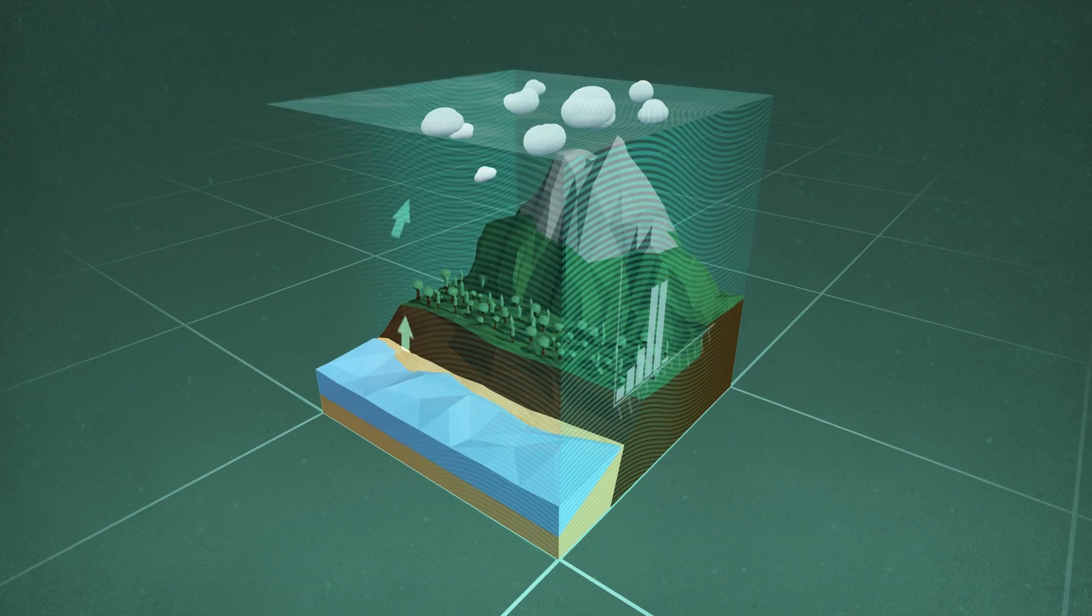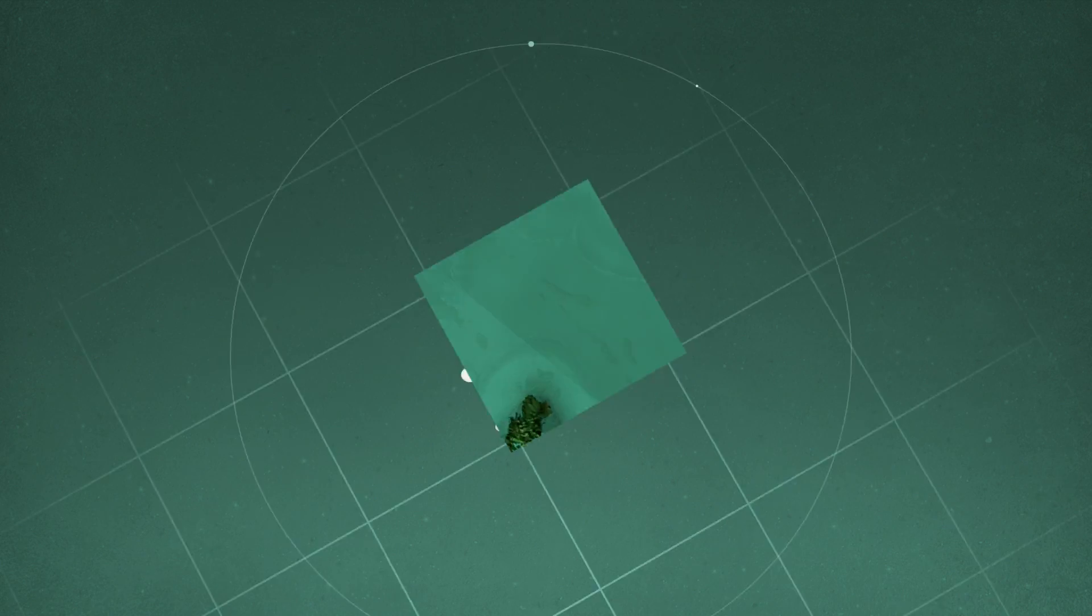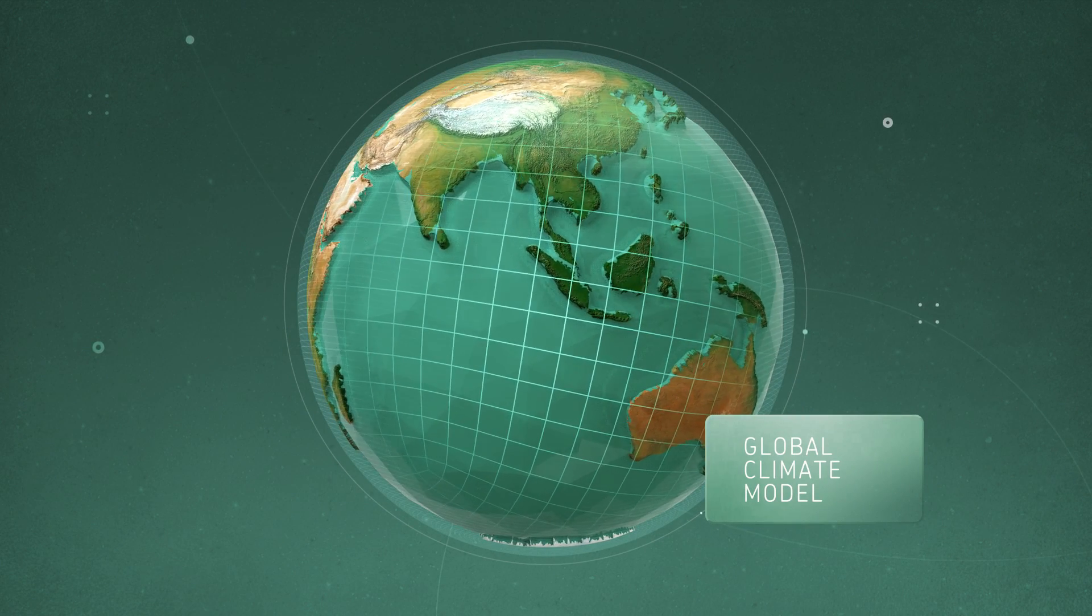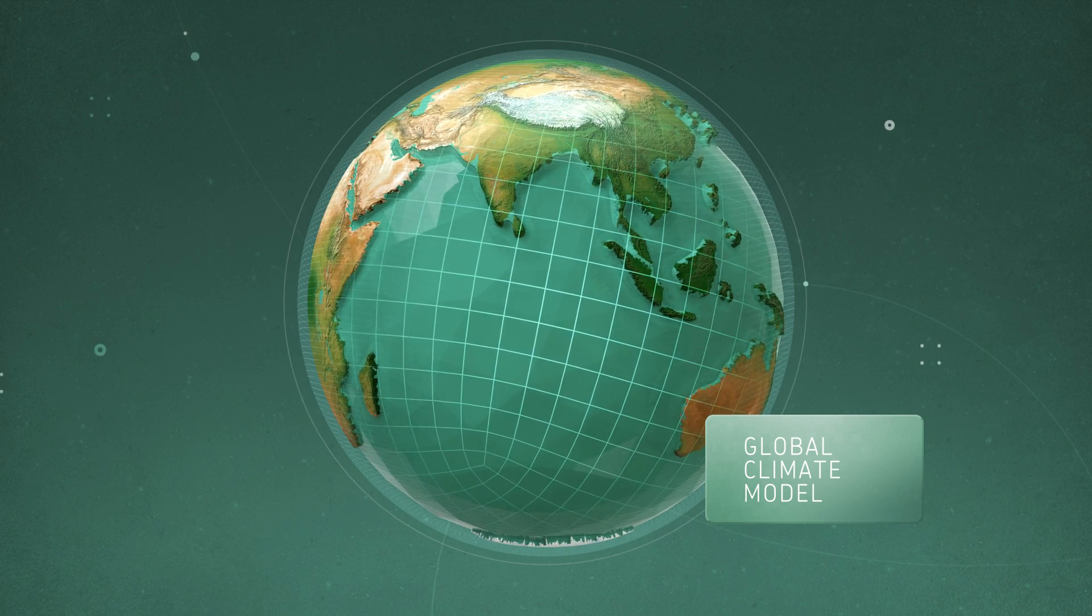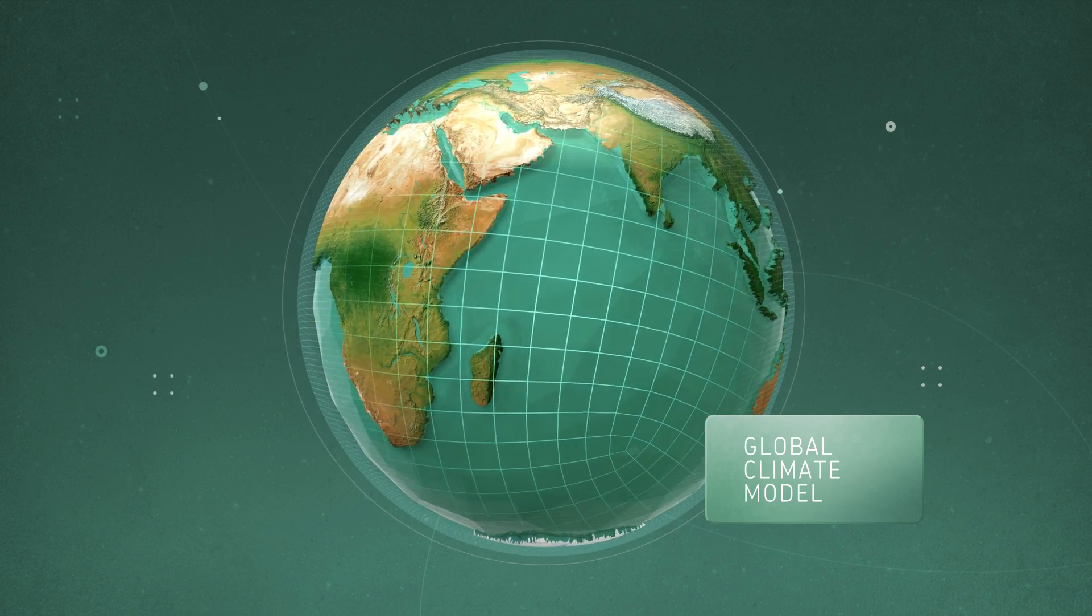Scientists use this knowledge to program computer models that simulate our weather and climate. These are called global climate models and they provide forecasts of weather over the next one to seven days and assessments of causes of past climate variability and projections of future climate change.